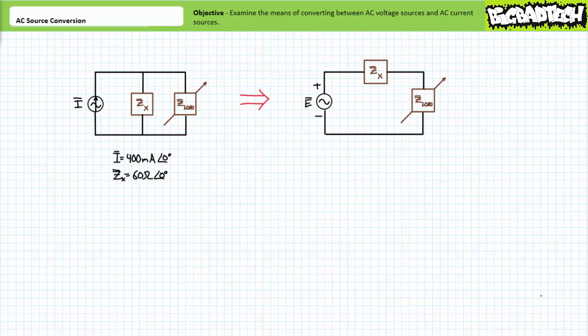Let's first deal with converting an AC current source in parallel with a fixed impedance to an equivalent voltage source in series with a fixed impedance. Consider a 400 milliampere at an angle of zero degrees current source in parallel with a fixed impedance of 60 ohms at an angle of zero degrees and a variable load impedance.